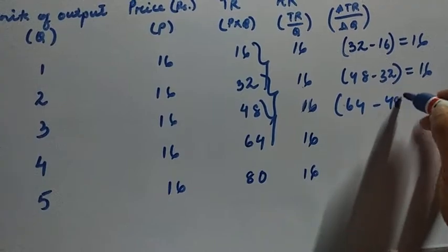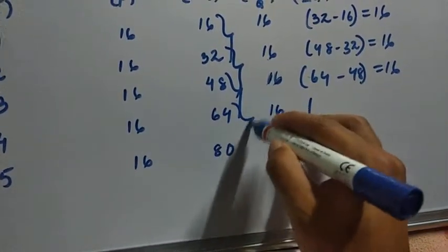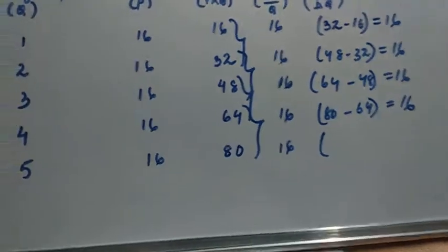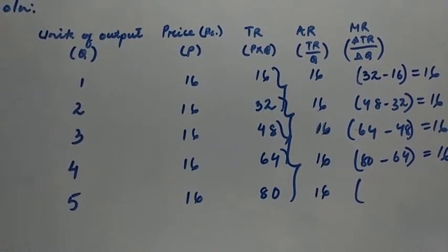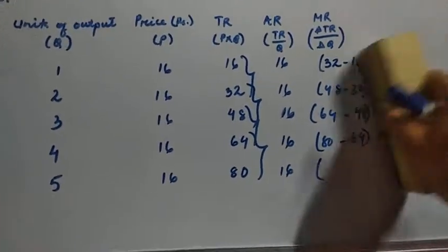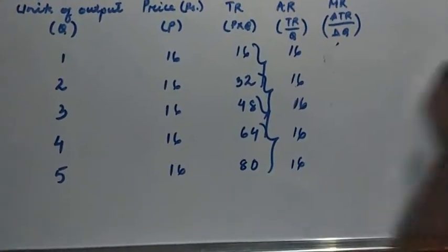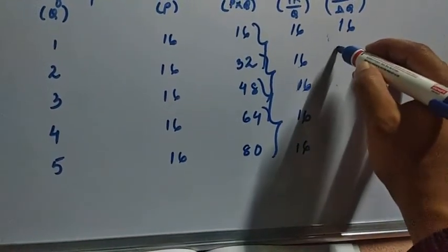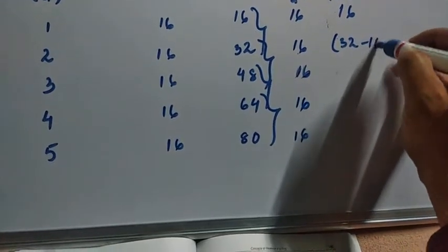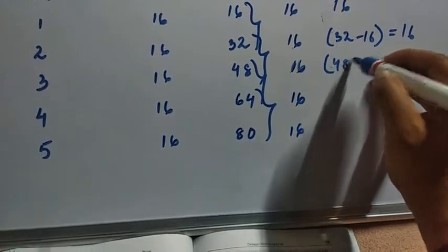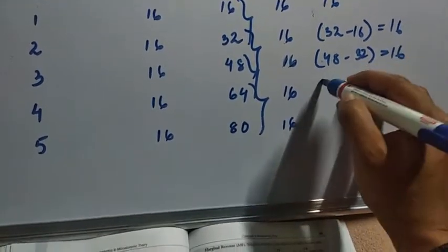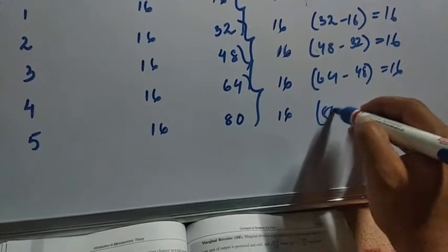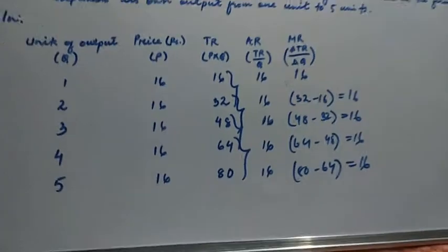Continuing the marginal revenue calculations: 64 minus 48 is again 16, and 80 minus 64 is again 16. So marginal revenue is 16 at every level of output throughout.